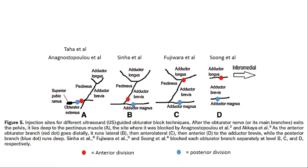Inject 10 ml of drug into the interfascial plane between pectineus and obturator externus. This single injection covers both the anterior and posterior divisions. The rationale is that after making the division, the nerve lies on the obturator externus muscle, with pectineus above it. Injecting in this interfascial plane between pectineus and obturator externus takes care of both divisions.